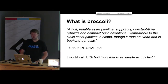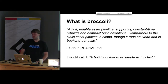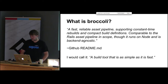So what is Broccoli? In their words, Broccoli is a fast, reliable asset pipeline supporting constant-time rebuilds and compact build definitions — comparable to Rails asset pipeline in scope, though it runs on Node and is back-end agnostic. I would just call it a simple and fast build tool. The whole core of Broccoli itself is maybe about 500 lines of code, so it's very simple to understand. And it's very fast.